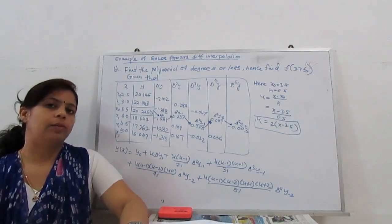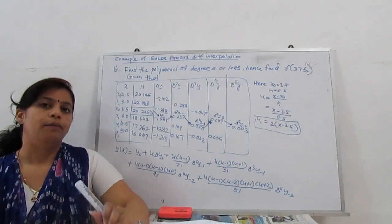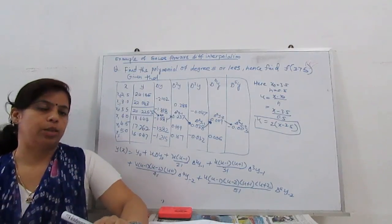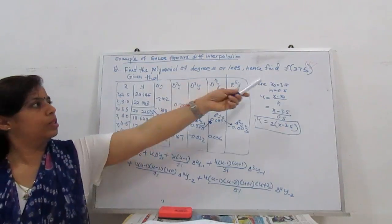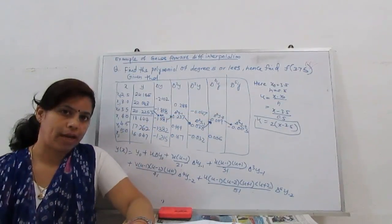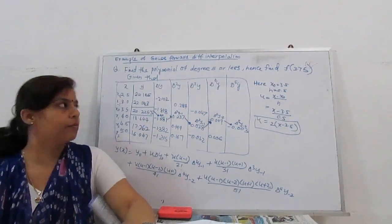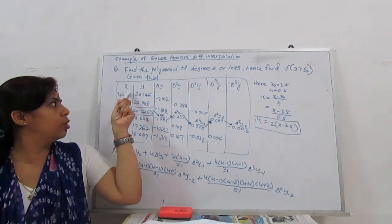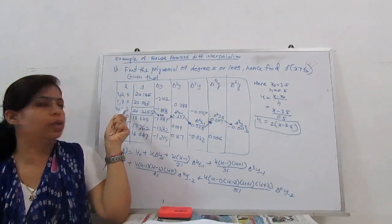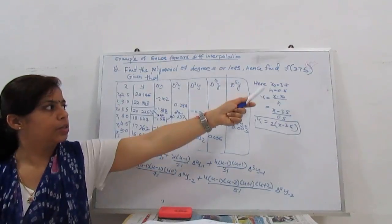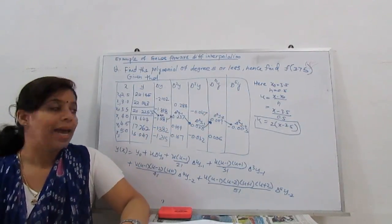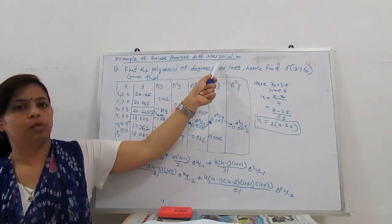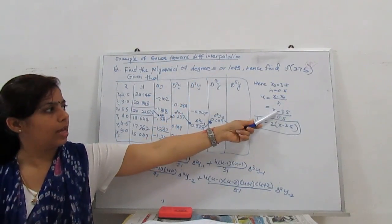In this forward table we use the central value for x₀. So x₀ we should take as 3.5. When x₀ is 3.5, the interval h is always fixed at 0.5 — from 2.5 to 3 is 0.5, and 3 to 3.5 is 0.5. So our u is (x minus x₀) divided by h. First we have to find out the polynomial.